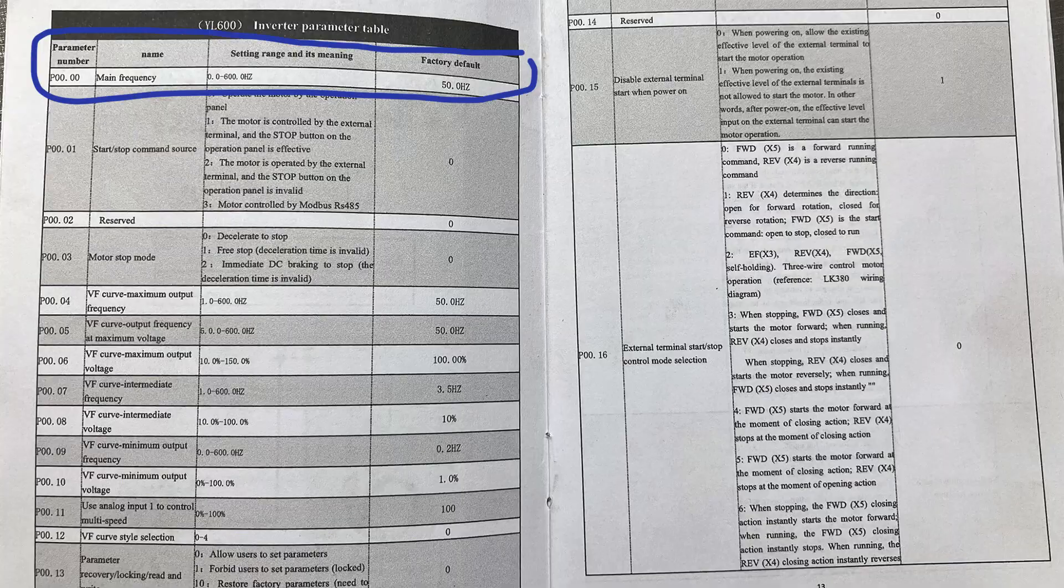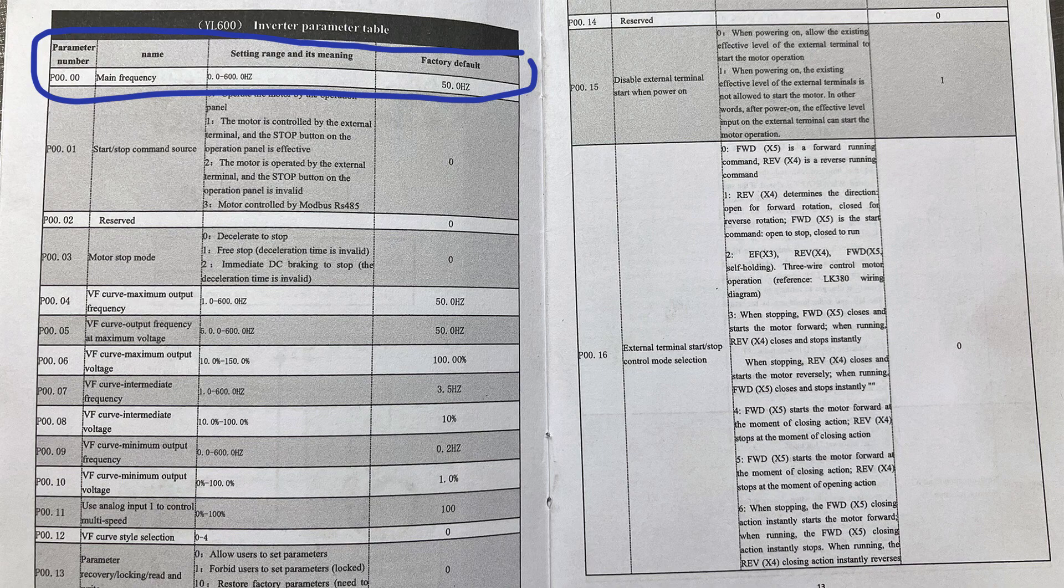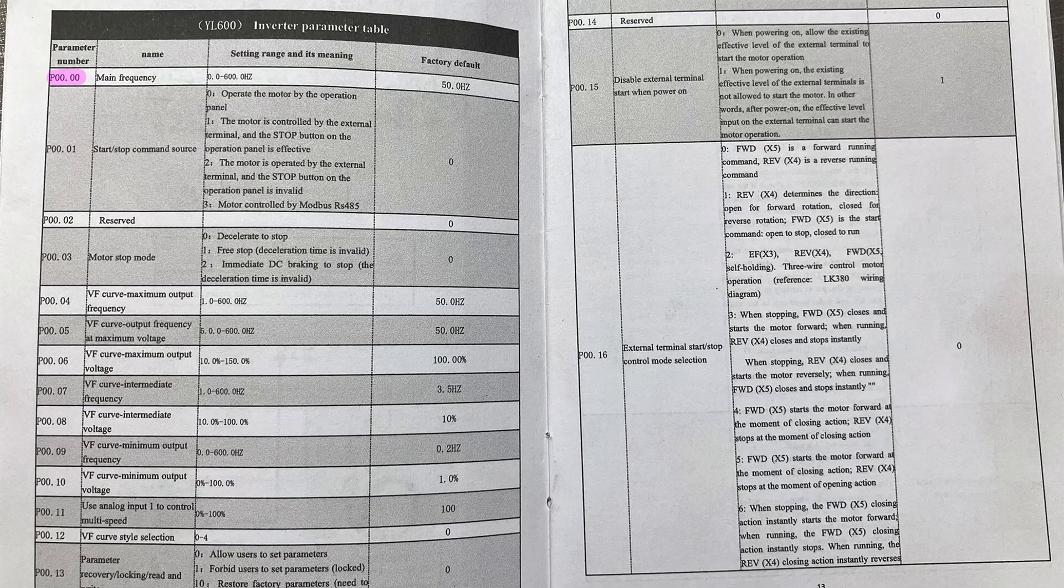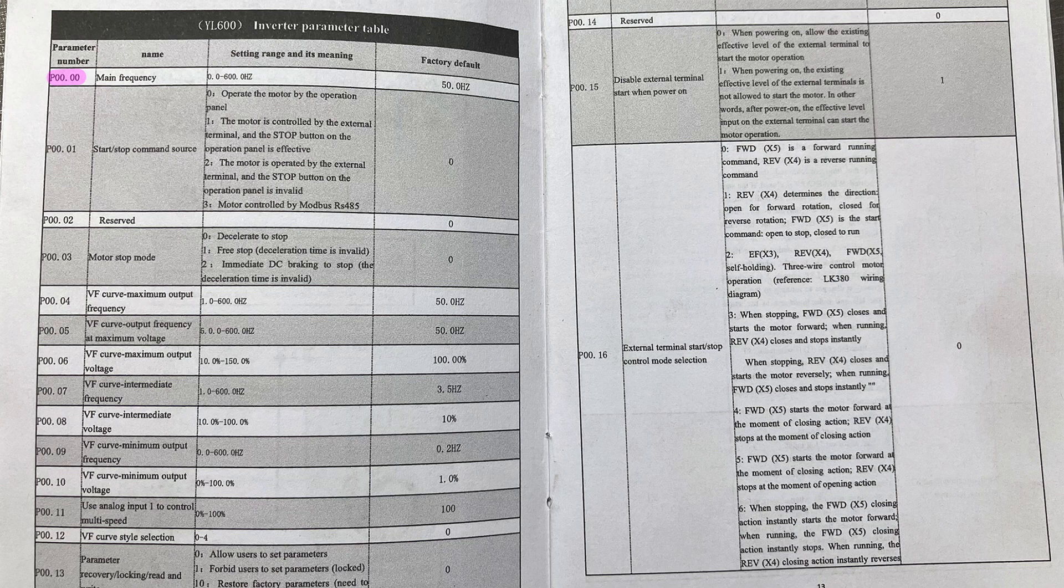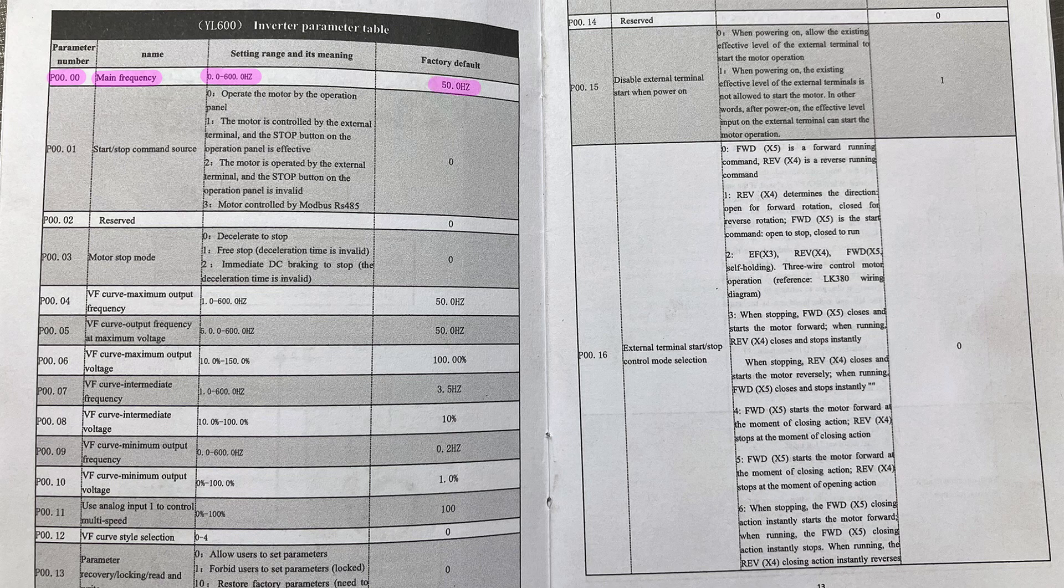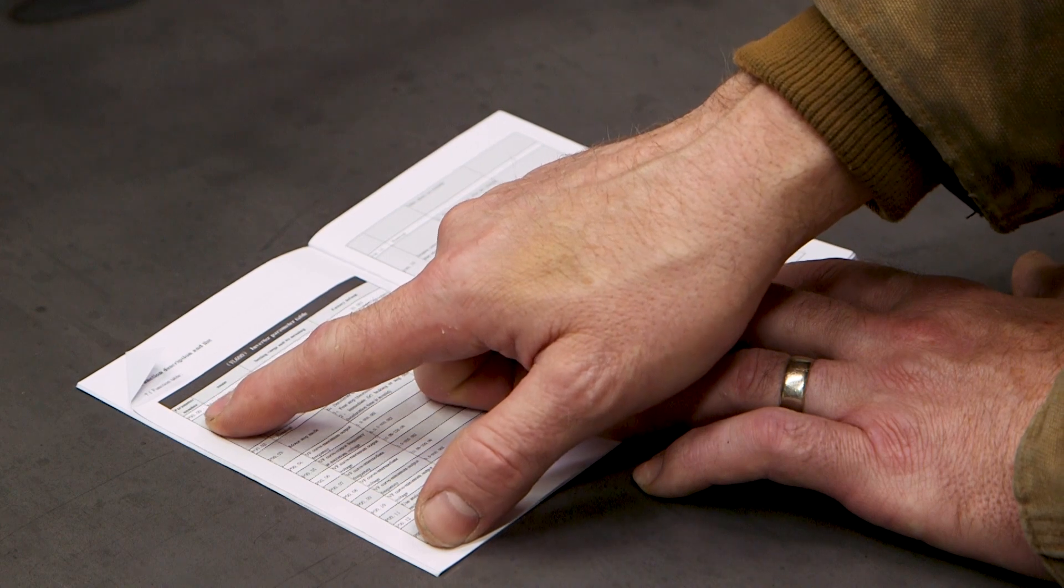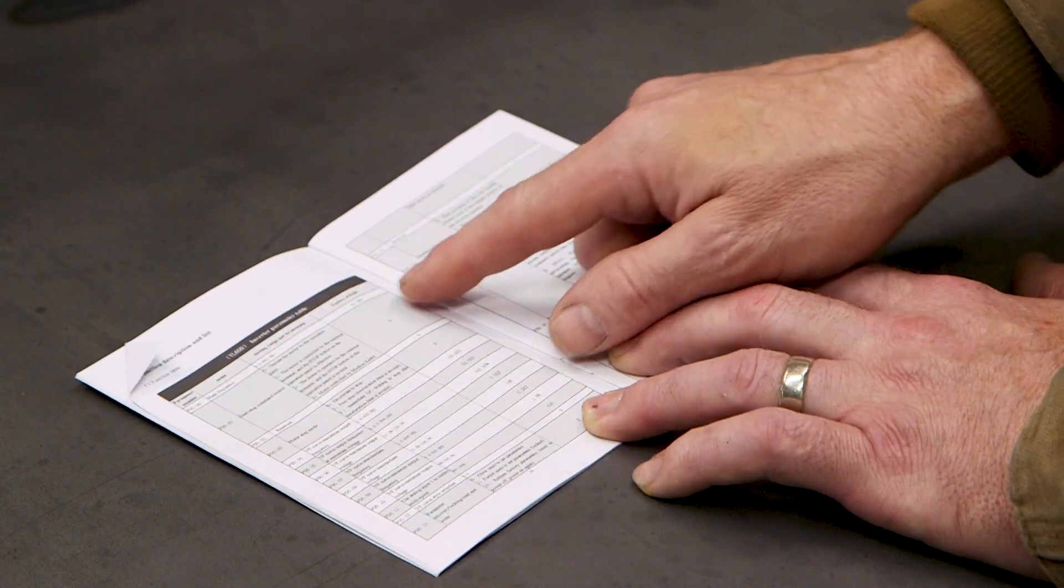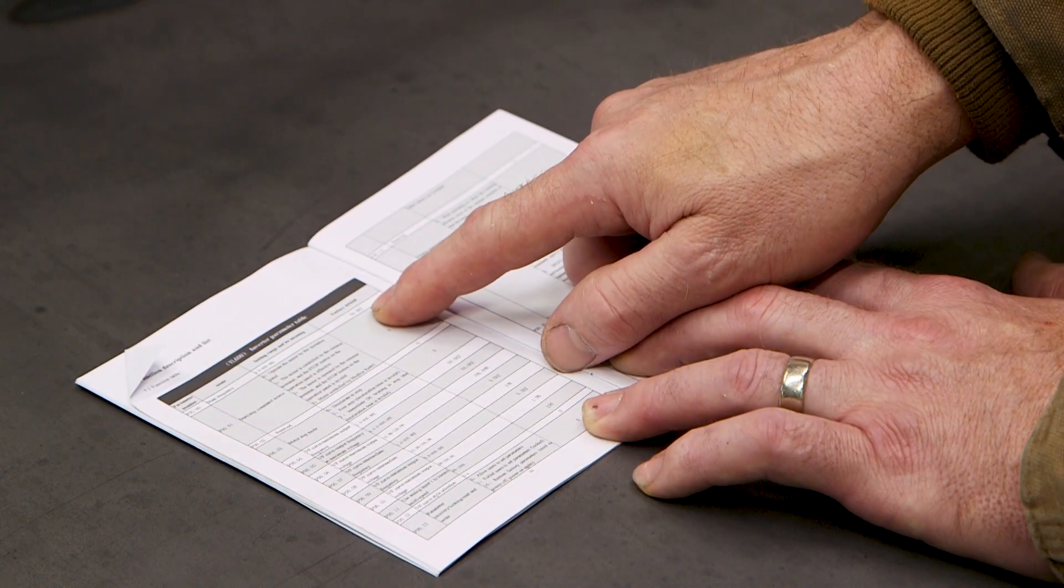So as an example, the very first one, this is the one that tells the VFD what your power is. So it's P0000. It's listed as the main frequency. It can be set between zero and 60 hertz and it's set at 50 hertz from the factory. So the first thing we'll adjust is this P0000 and we'll change this to 60 to match US power.